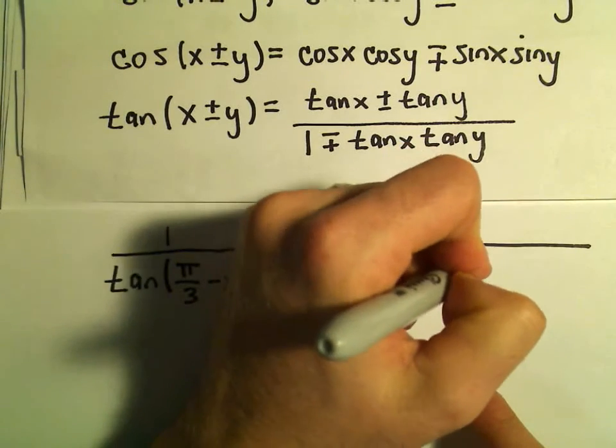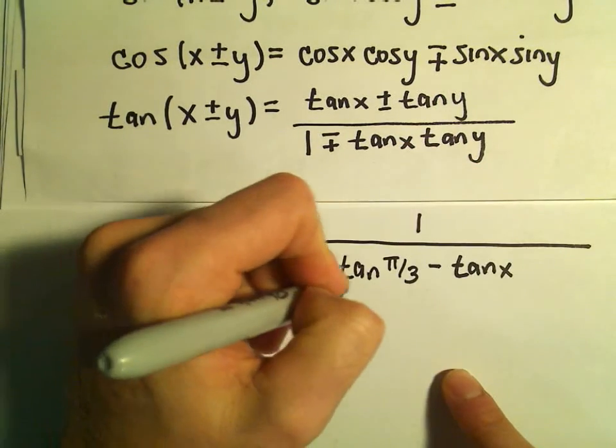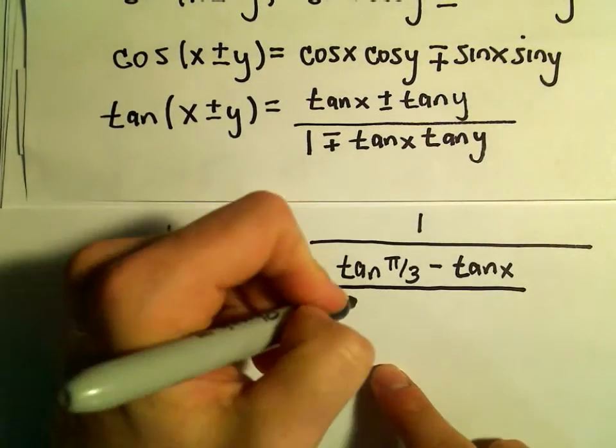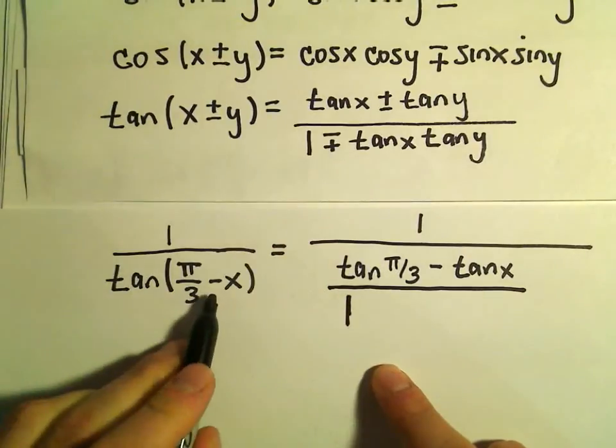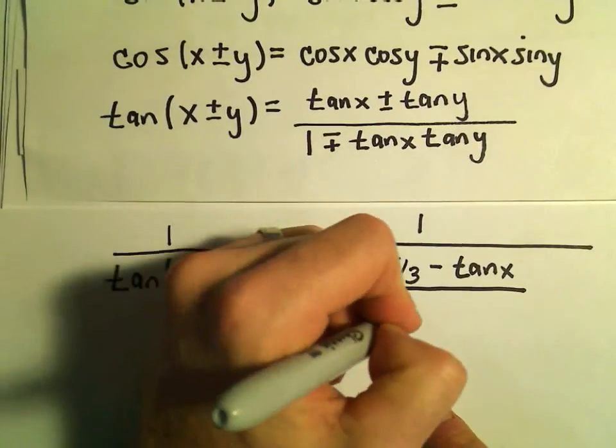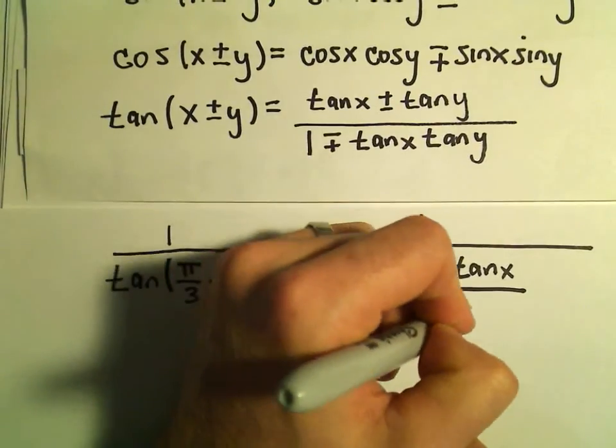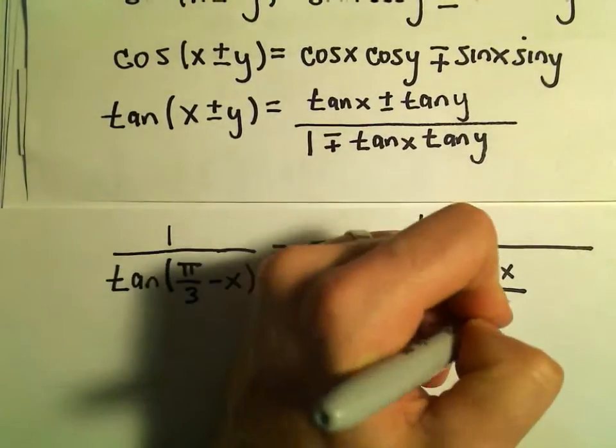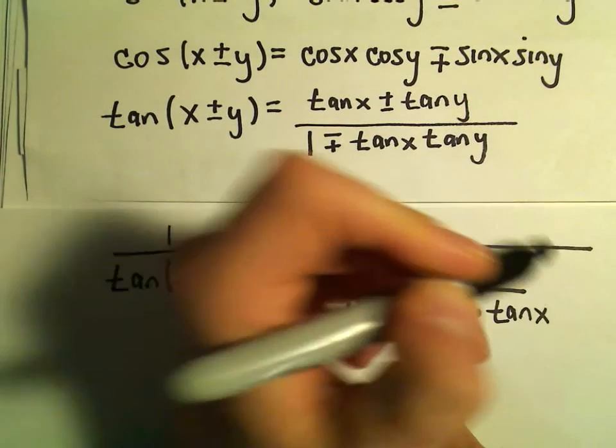That's all divided by 1. If there's a minus sign in between, we use a plus sign in the denominator. So we get 1 plus tangent of π/3 times tangent of x.